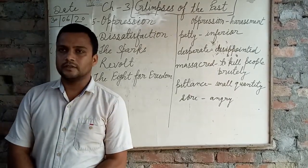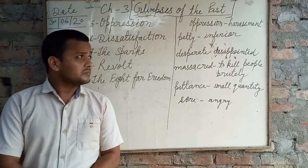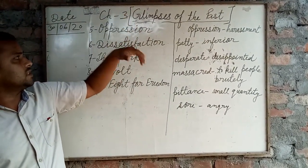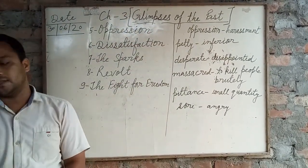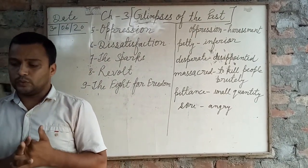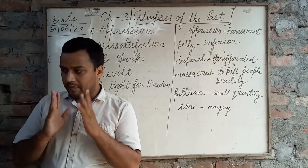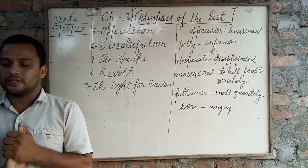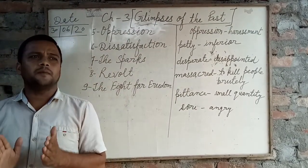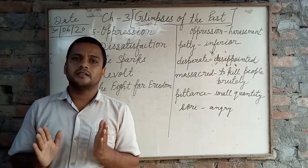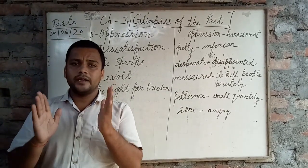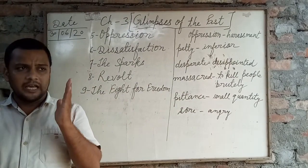Good morning students, today I am going to teach you the remaining part of Chapter 3, 'Glimpses of the Past.' In the previous lecture, I taught you that by its superior weapons and diplomacy, the East India Company extended its power. The enmity among the Indian emperors helped the British to extend their power in India.